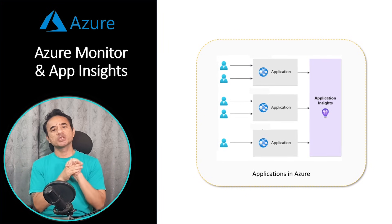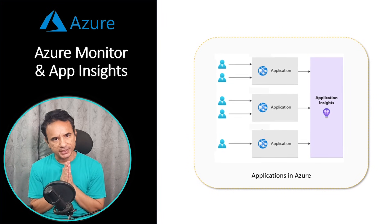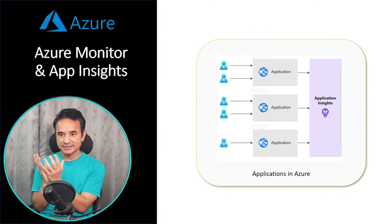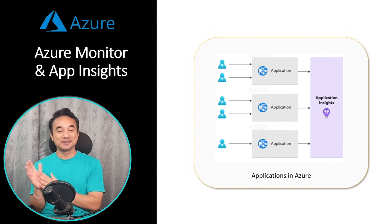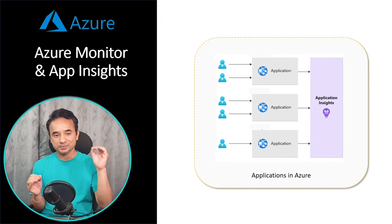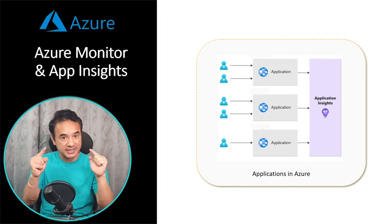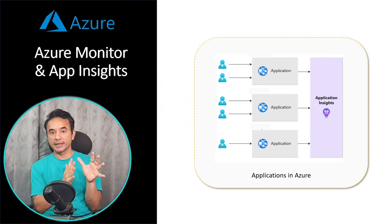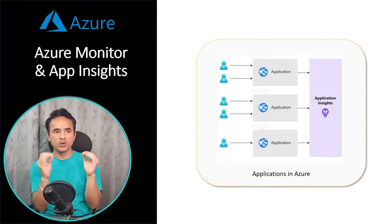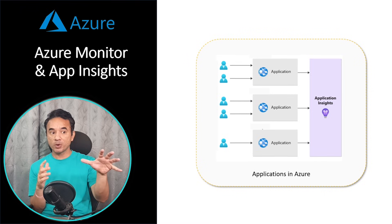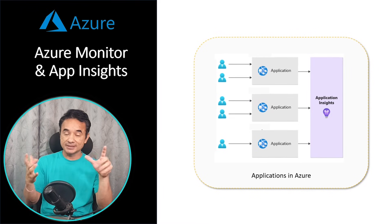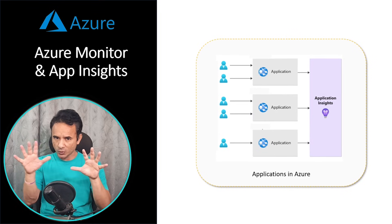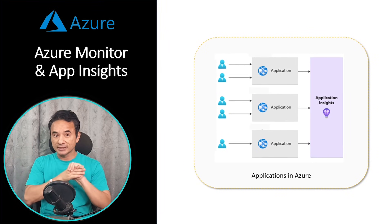In my first Azure project, a tester raised a performance latency issue and I started debugging the code — but that was the wrong approach. Exploring Azure Monitor and App Insights is the right approach. In this video I'll explain both in simple terms, show how they're connected, and most importantly when to use which one. This is also a very favorite interview question especially for developers.